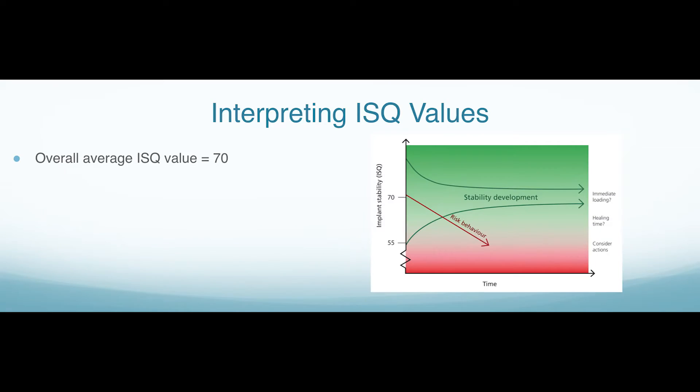When evaluating ISQ, what we see as a general average is values around 70. That's kind of where many implants lie, right around 70 as an average and thereabout.